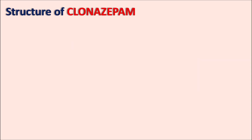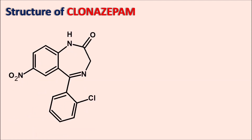What is the structure of Clonazepam? Clonazepam is a benzodiazepine derivative. The numbering starts from the first nitrogen on the seven-membered ring system: positions one, two, three, four, five; then continuing to the benzene ring: six, seven, eight, nine.